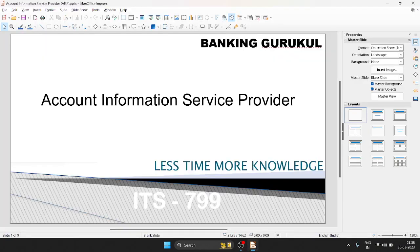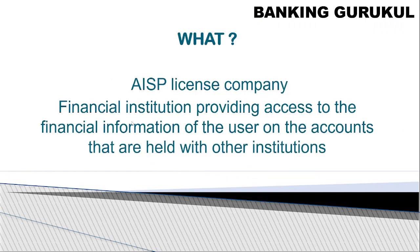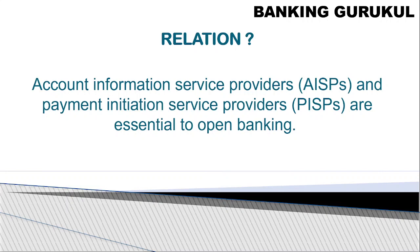Today we will discuss Account Information Service Provider (AISP). An AISP is a licensed company — a financial institution — that provides access to the financial information of users on accounts held in other institutions. They are a licensed financial company that can access your financial information from other institutions, and they display that information.